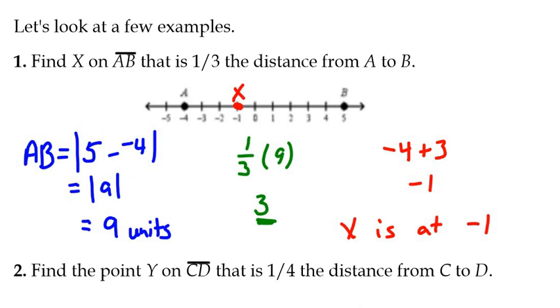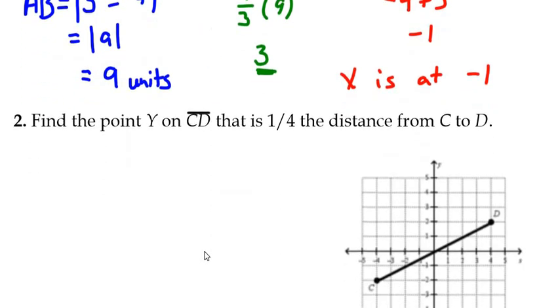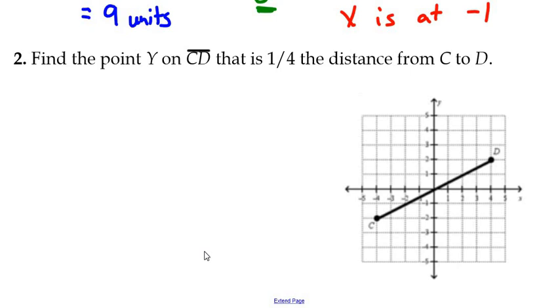There's another way that we could say this. We could say find a point X on AB, such that the distance AX to XB is in the ratio of 1 to 2. That's the same thing as saying 1 to 3. Second example here, we're going to find a point Y on CD. That is one-fourth the distance from C to D.